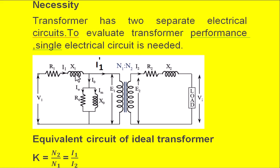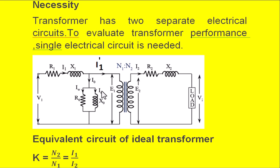I0 is the no-load current of the transformer. The no-load current components are the real power loss component Iw (or Ic) and the magnetizing current component Im, which passes through X0 (also represented as Xm). This is the magnetizing reactance, and R0 is the core loss component.